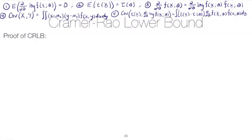In our previous video we proved the Cauchy-Schwarz inequality, and the reason we've done that is because we'd like to prove the Cramer-Rao lower bound. The Cramer-Rao lower bound gives us a lower bound for the variance of an unbiased estimator of a parameter.